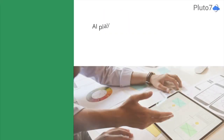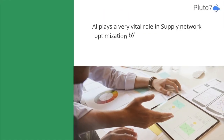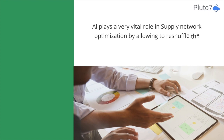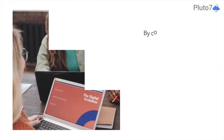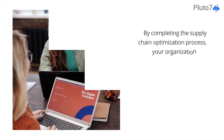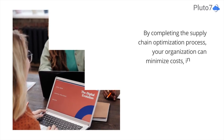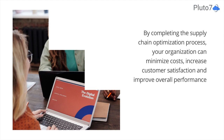AI plays a very vital role in supply network optimization by allowing to reshuffle the network dynamically when an event occurs. By completing the supply chain optimization process, your organization can minimize costs, increase customer satisfaction, and improve overall performance.